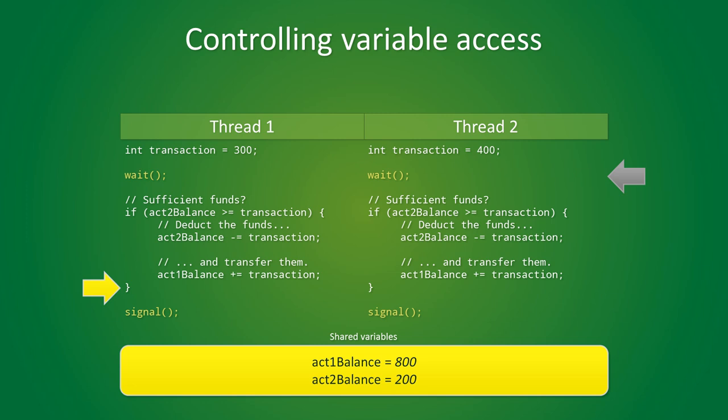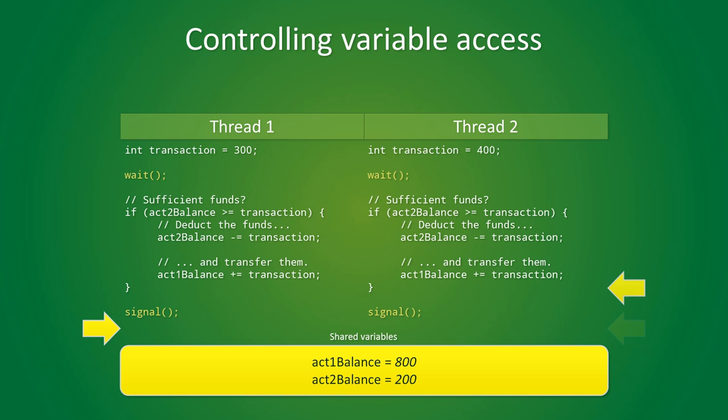After executing the transaction, thread 1 leaves its critical section by calling the signal function, which will then wake up thread 2. It will enter the if test and notice that there are insufficient funds available for the transaction, so it will bounce, as we expected. Finally, thread 2 will leave its critical section by, once again, calling the signal function. It's perfectly possible that thread 2 is the first to enter their critical section. In this case, transaction number 2 will be executed, but transaction number 1 will not, due to insufficient funds. We don't know in which order these transactions will be processed, but we do know that no two threads will be processing transactions simultaneously.